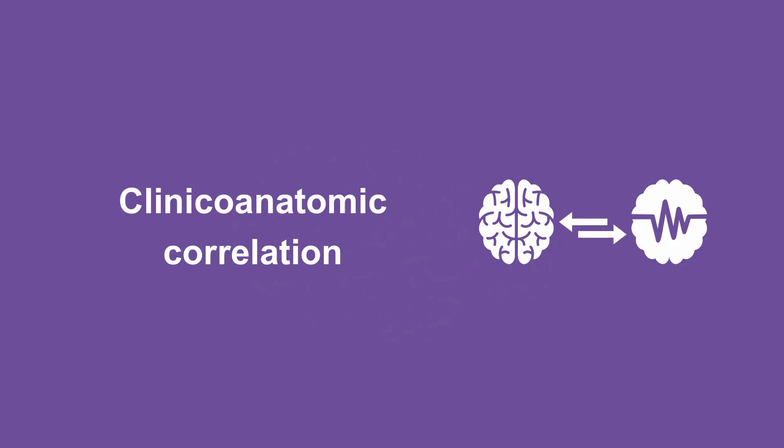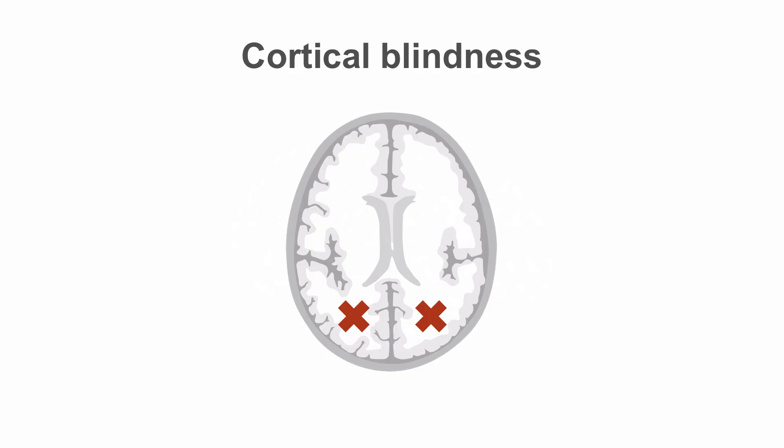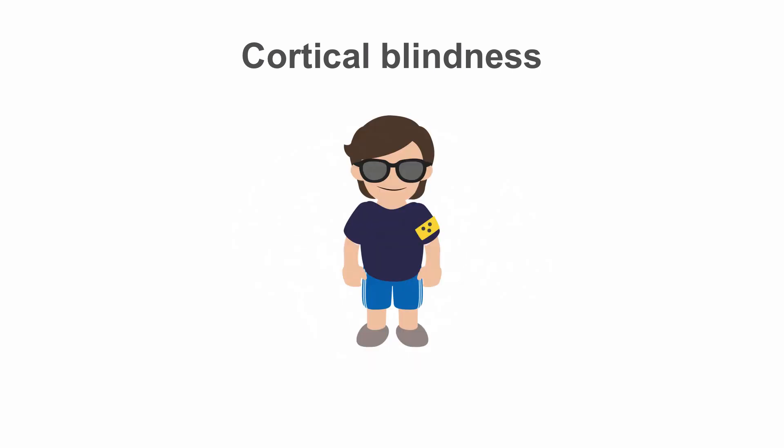There are many important clinical anatomical correlations involving the occipital lobe. When bilateral occipital lobe lesions, such as infarcts, occur, the patient will demonstrate cortical blindness. Often the patient does not recognize they are blind. In fact, they often confabulate or make up descriptions of what they see. This collection of signs and symptoms is called Anton's syndrome.